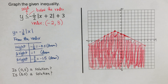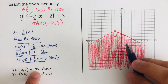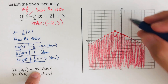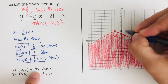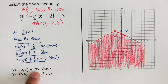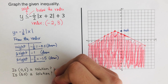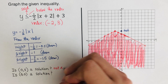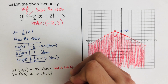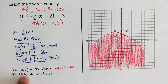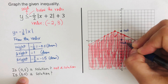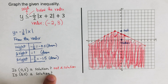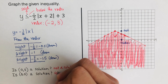Let's check the solutions. The point zero, five is up here — it is not a solution because it is outside the shaded region. The point zero, zero is right here, and it is a solution because it is part of the shaded region.